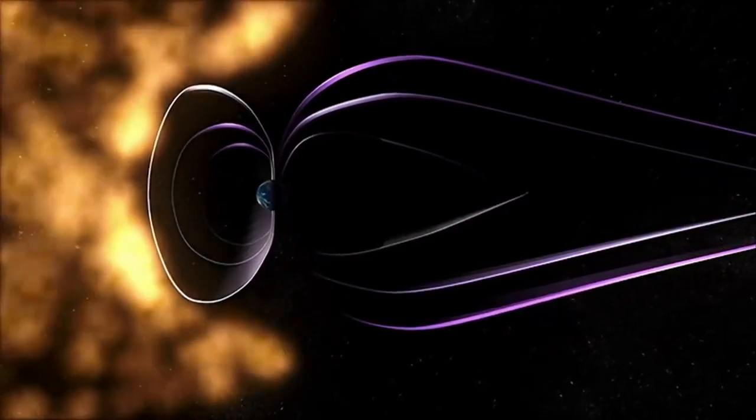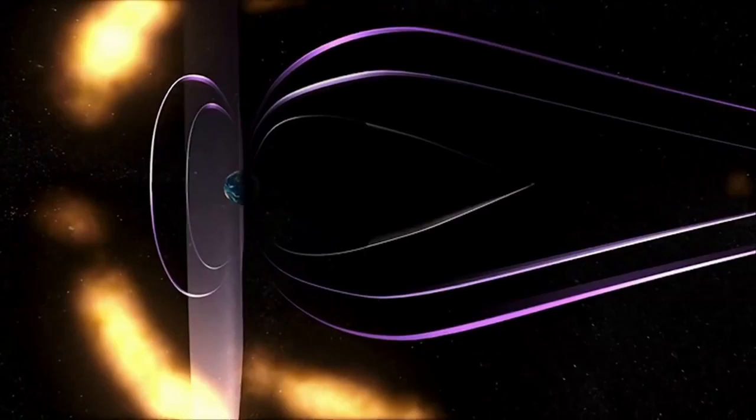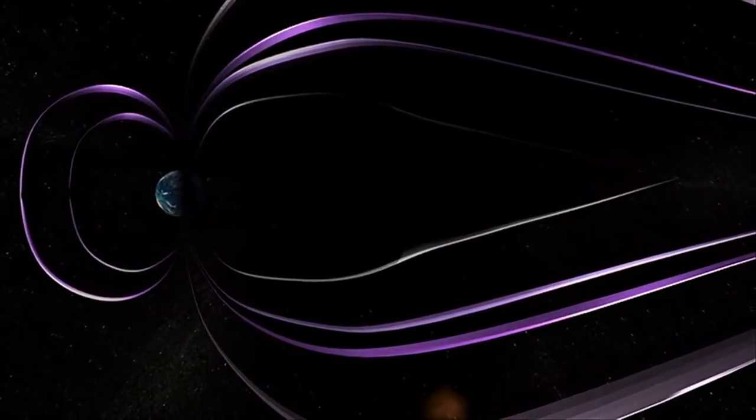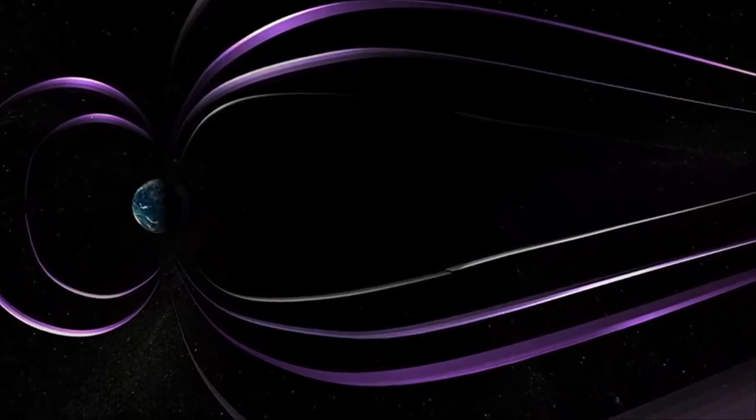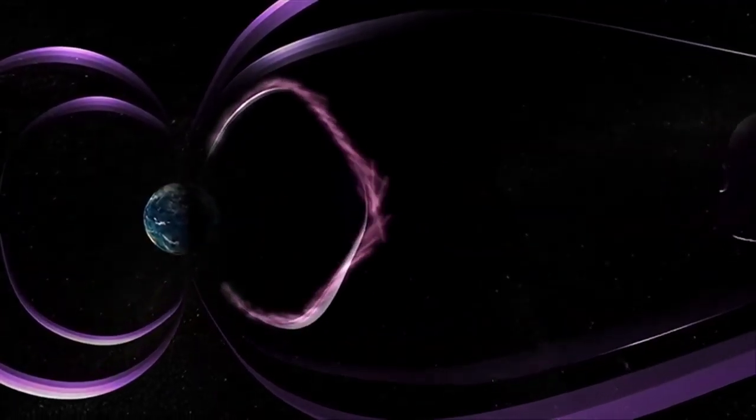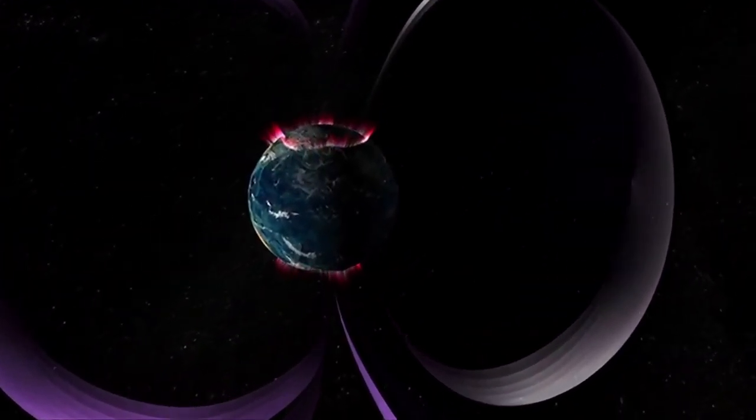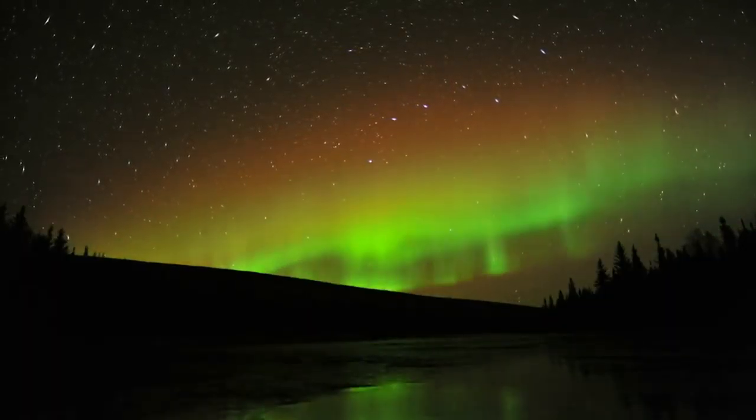When directed at Earth, this energy, arriving in the form of a stream of charged particles, is mostly deflected by the planet's own magnetic field. But some of the charged particles get through and create beautiful aurorae in the northern and southern polar regions.